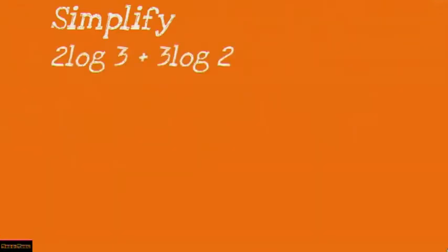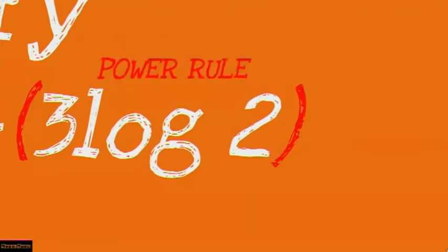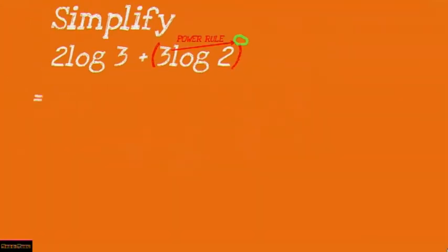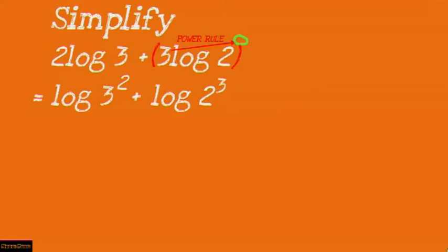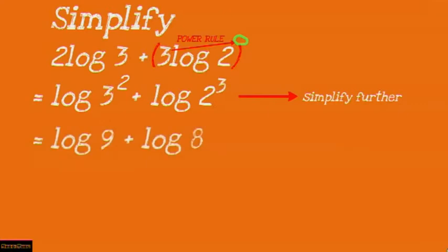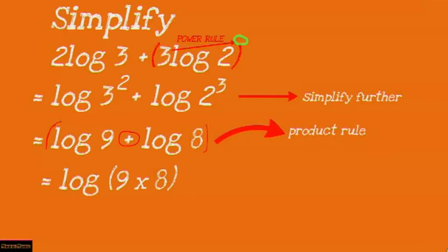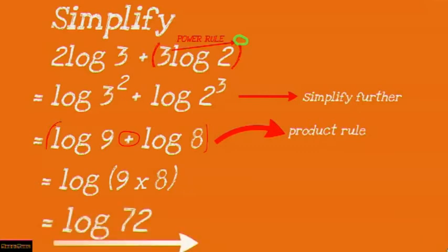Let's look at another example: simplify 2 log 3 plus 3 log 2. We apply the power rule by bringing the coefficients up as exponents — 2 log 3 becomes log (3 to the power 2), and 3 log 2 becomes log (2 to the power 3). So we have log (3²) plus log (2³), which simplifies to log 9 plus log 8. Applying the product rule gives log (9 times 8), which equals log 72.